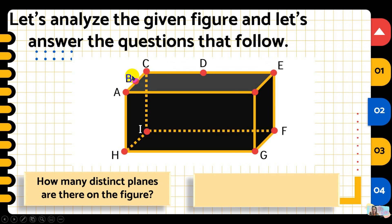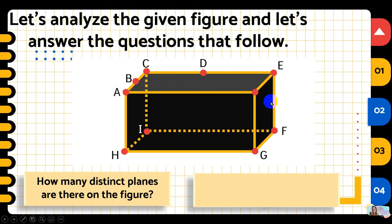The top face has 5 distinct points — that's the first plane. The bottom face has 4 points — the second distinct plane. One side face has 5 points — the third plane. The opposite side face has 3 points, which still qualifies — the fourth plane. The back face has 5 points: C, D, E, F, I — the fifth plane.